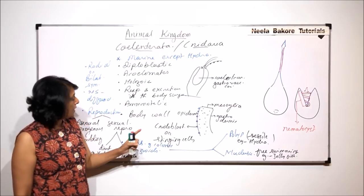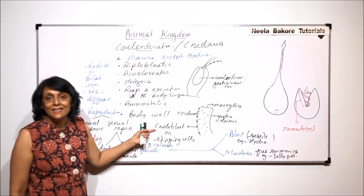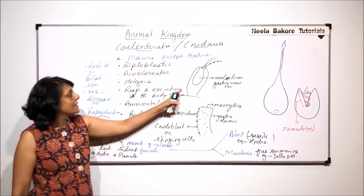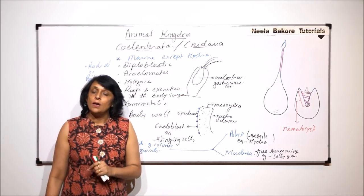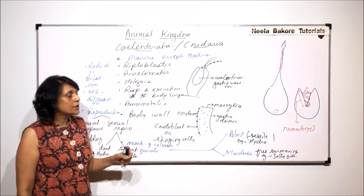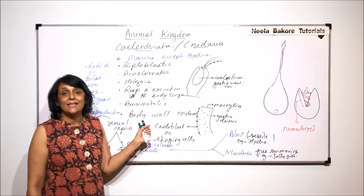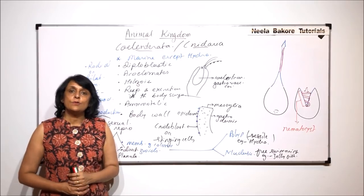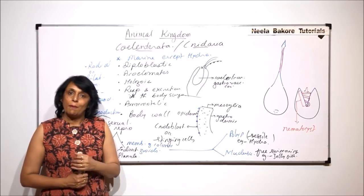The most important feature is this stinging cell, that is cnidoblast, and the cavity which is called the coelenteron. Now in the next part, we will take some special examples of Coelenterata and we will try to see the special features of those members.